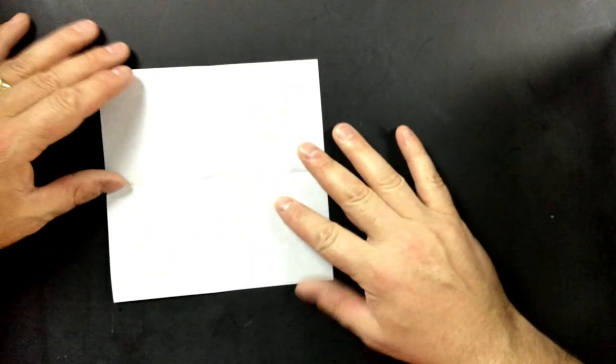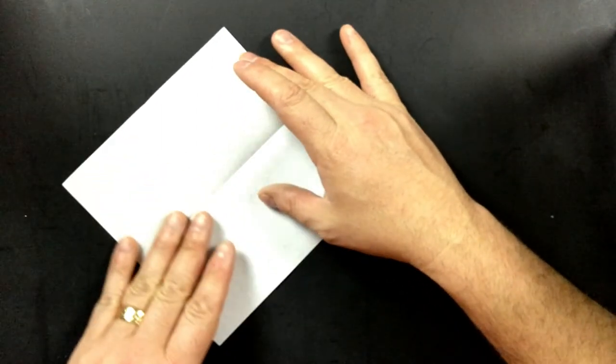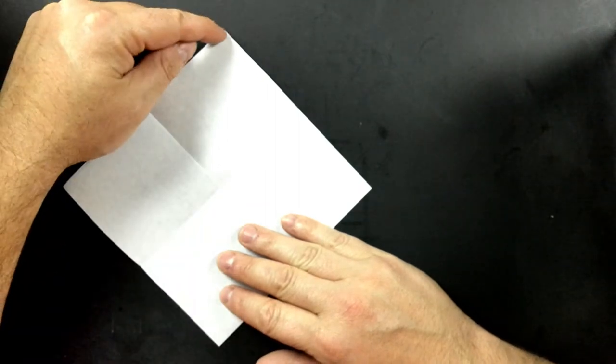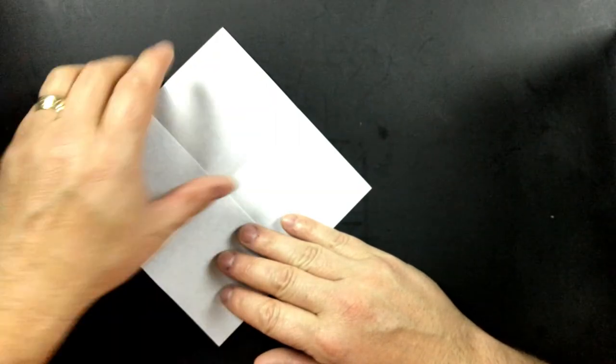We're going to open it back up, and we're going to rotate this so it is in the shape of a diamond. And what we want to do now is take the top and fold it down to the bottom.